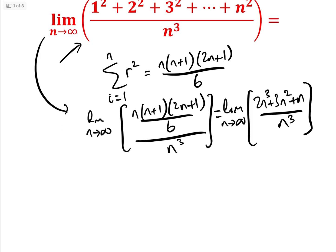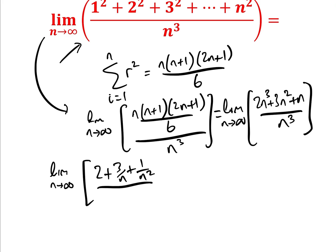When we divide by n cubed we get the limit as n approaches infinity of 2 plus 3/n plus 1/n² — and I missed a 6 there — over 6. As n approaches infinity, the 3/n and 1/n² terms become 0, giving us an answer of one third.